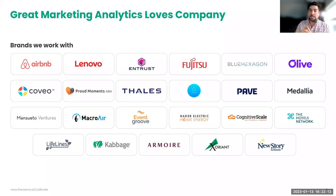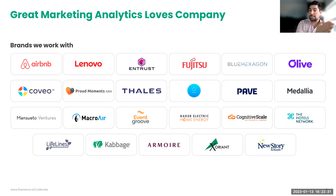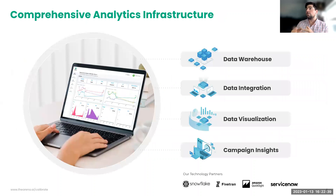We work with a variety of brands. Some of the names include Airbnb, Lenovo, Thales, Fujitsu, and Olive. There are tons of different companies that we work with and handle their BI analytics. Each company has different wants and needs, and our level of customization is catered to each company to make sure it's an exact match and delivers exactly what's needed.